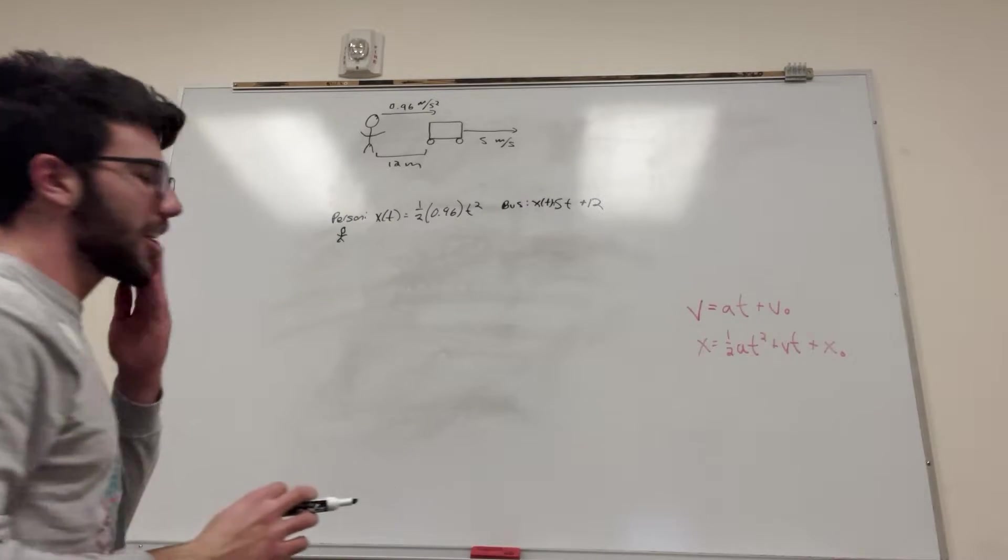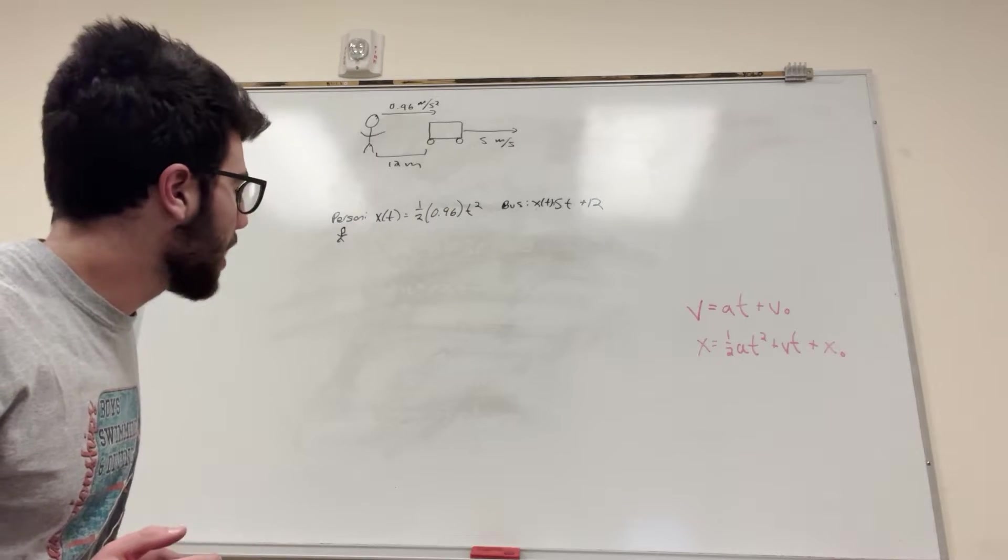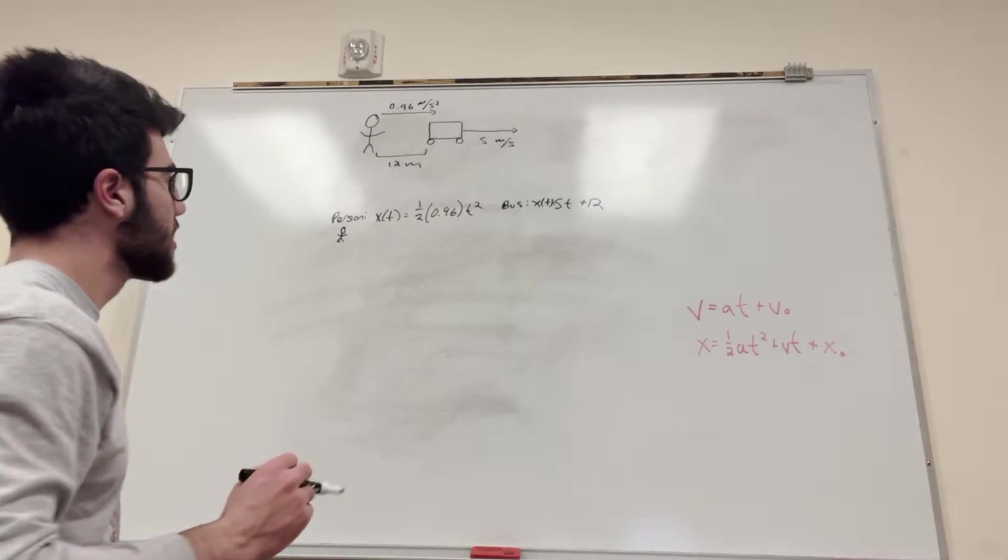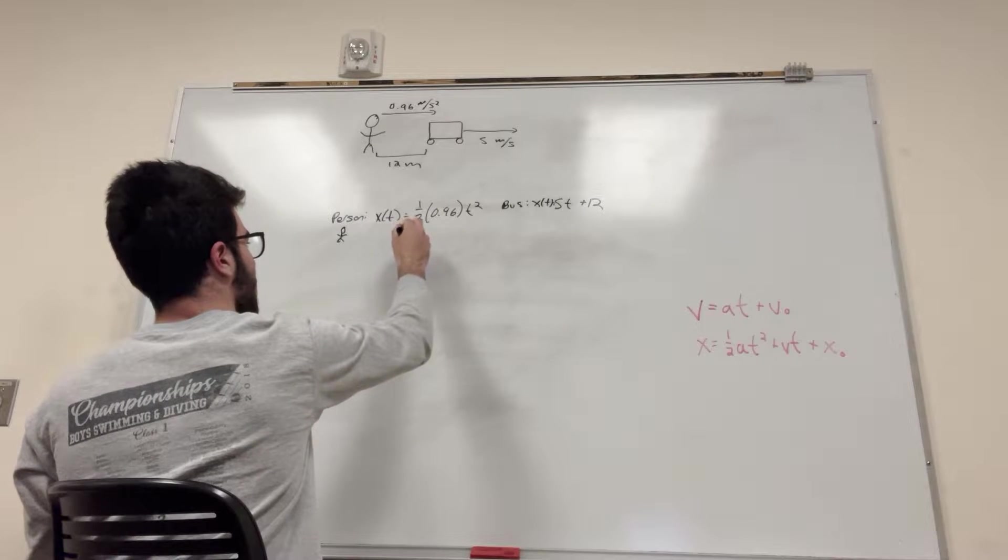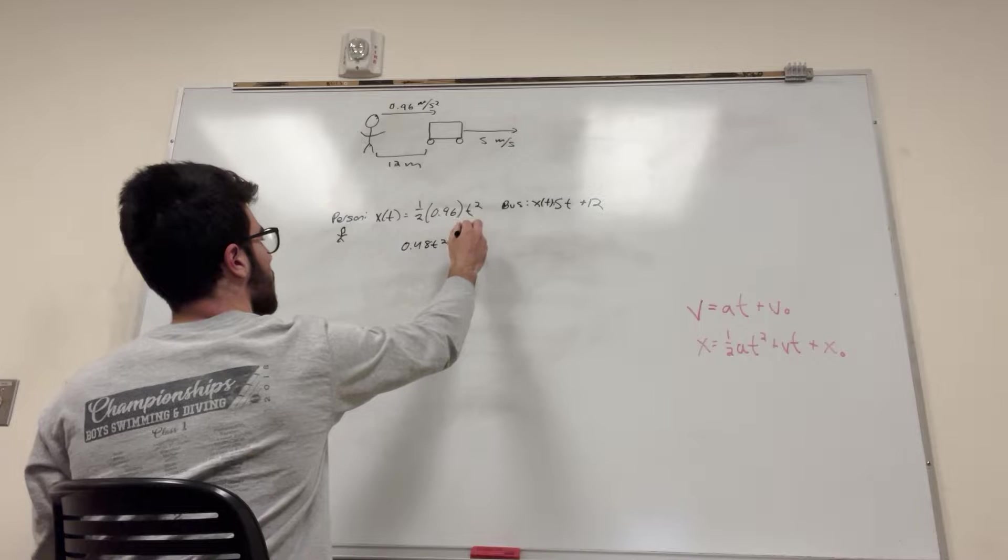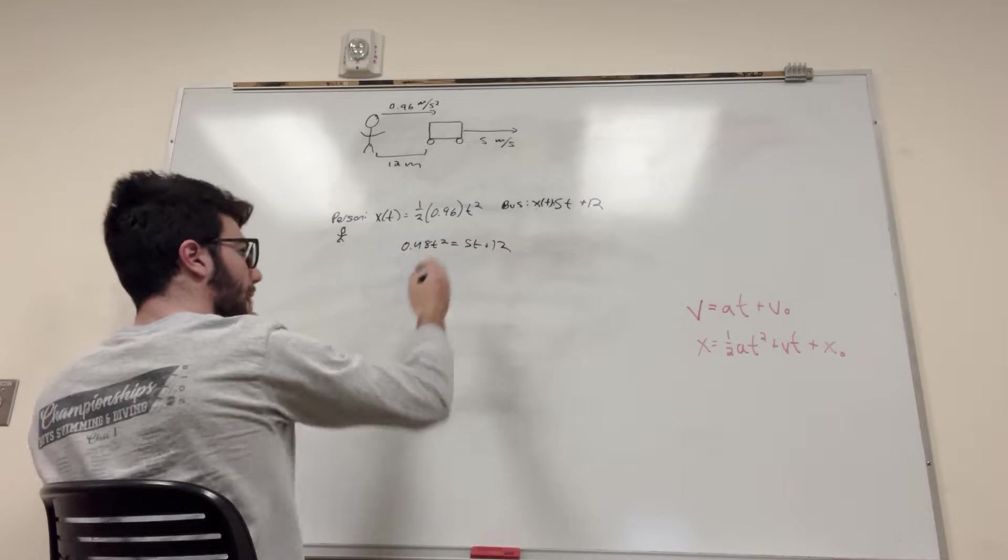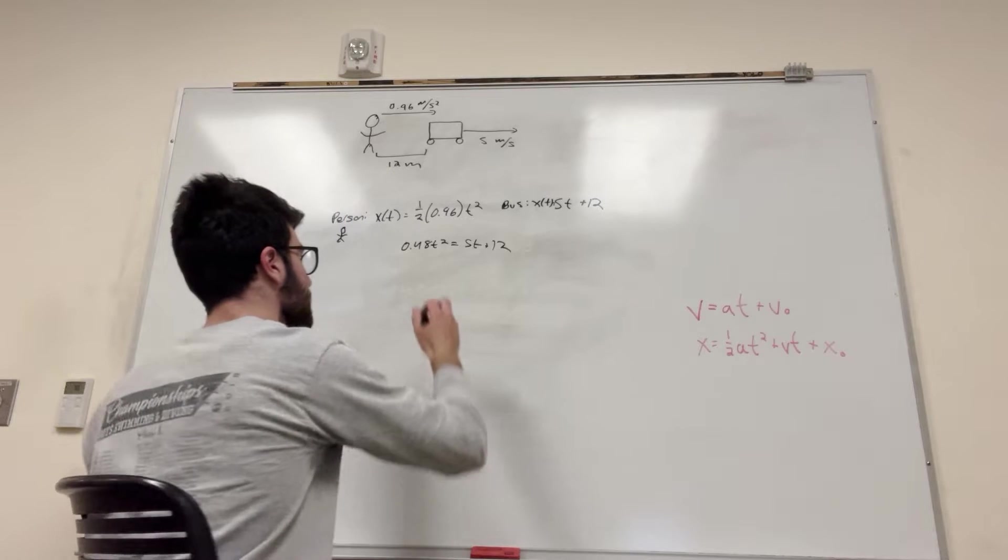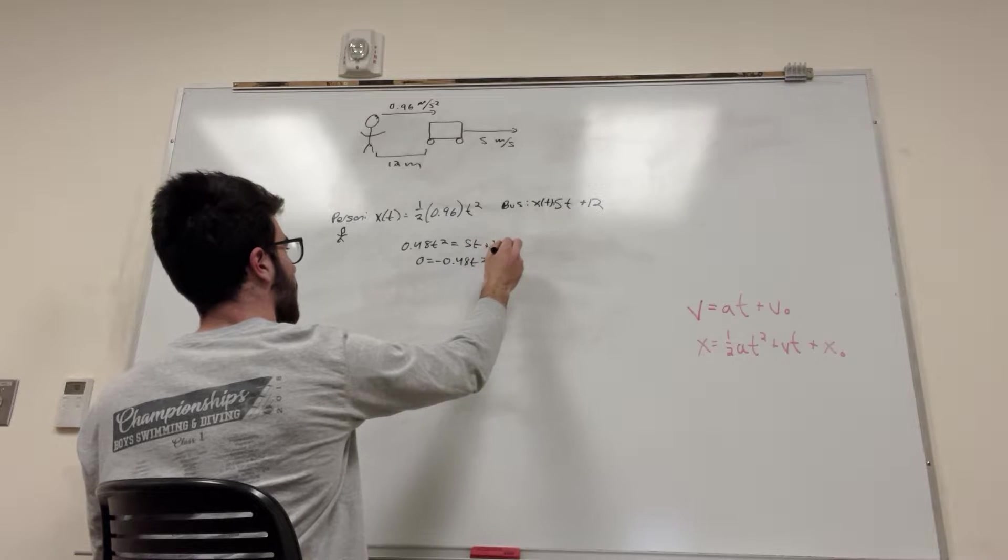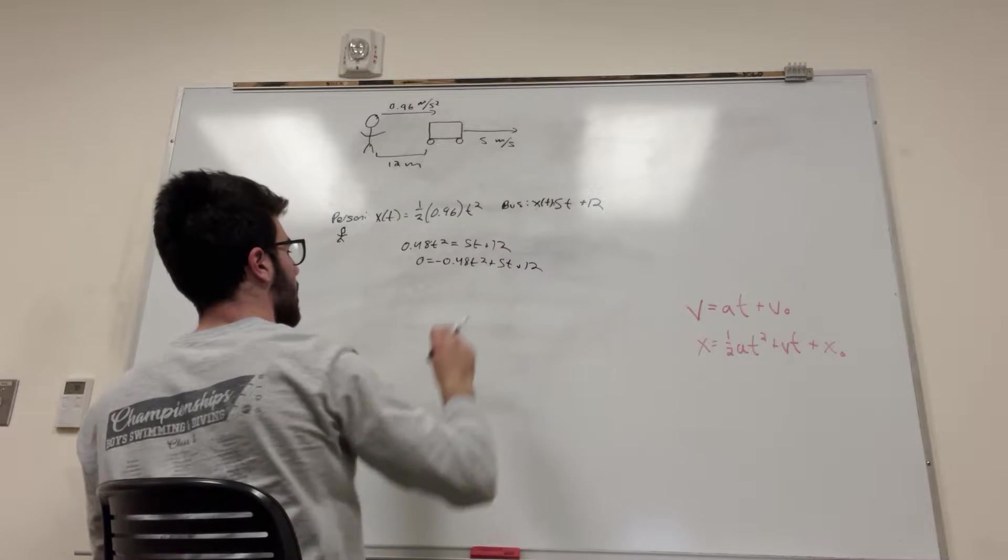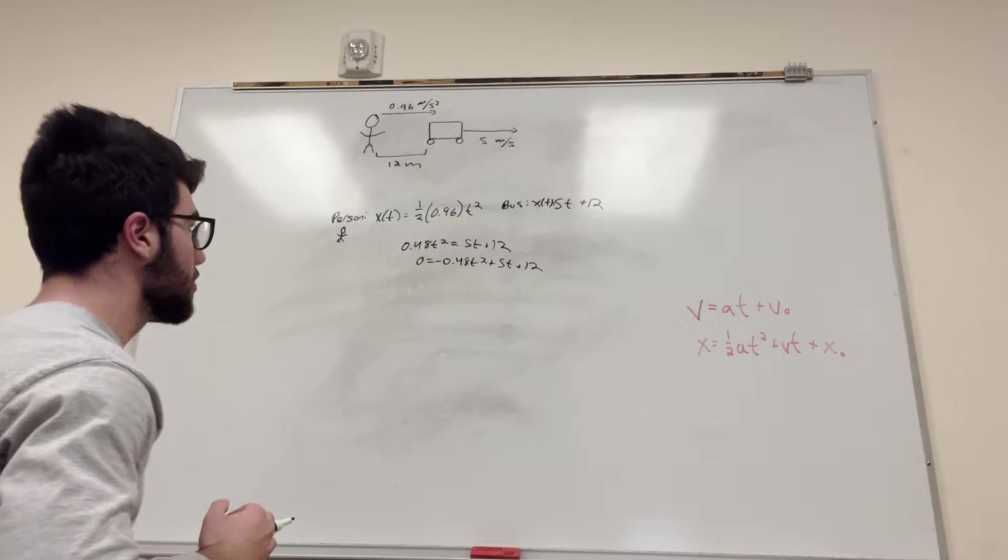Now we're going to set the x's equal to each other because we're going to find where the position intersects. So we have 0.48 t squared equals 5t plus 12. Then we subtract this from both sides so we can use the quadratic formula. So 0 equals negative 0.48 t squared plus 5t plus 12.